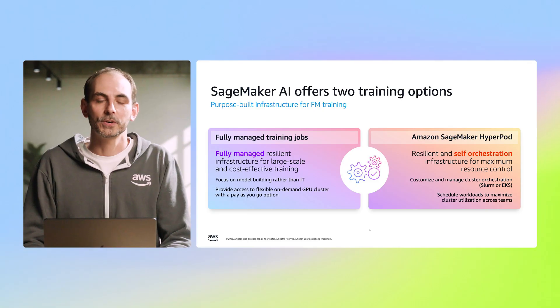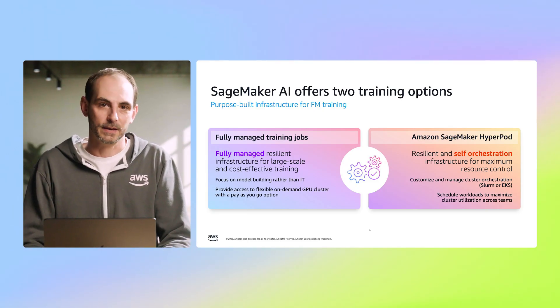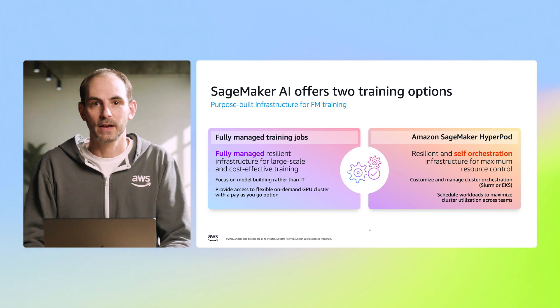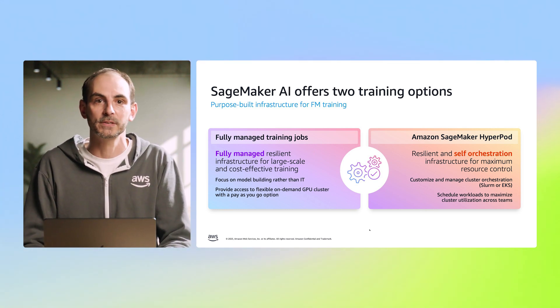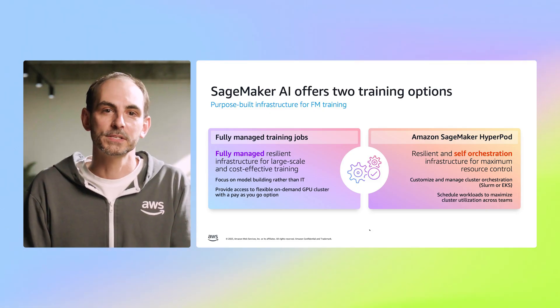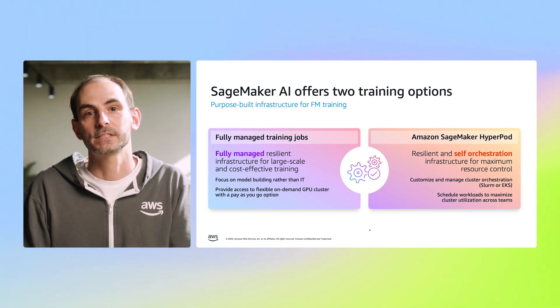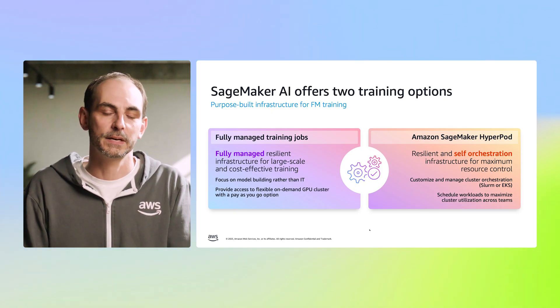SageMaker training jobs feature a user-friendly interface, simplified setup and scaling, automatic handling of distributed training tasks, built-in synchronization, checkpointing, fault tolerance, and abstraction of infrastructure complexities. For organizations that require granular control over training infrastructure and extensive customization options, SageMaker HyperPod is the ideal choice. HyperPod offers custom network configurations, flexible parallelism strategies, and support for custom orchestration techniques. It integrates seamlessly with tools such as Slurm, Amazon EKS, NVIDIA's Enroot, and Pyxis, and provides SSH access for in-depth debugging and custom configurations.